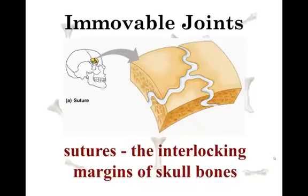A slightly movable joint, not mentioned in your book, would be your vertebral column — in between each of the vertebrae those are slightly movable joints. Immovable joints can't move at all. That's the interlocking margins of your skull bones. When you were born you had a whole bunch of bones that weren't fused together yet — that's why you had the soft spot. All those cracks you see on a skull are where bones have been fused together, and now that's an immovable joint.